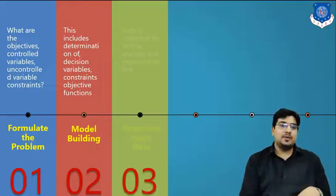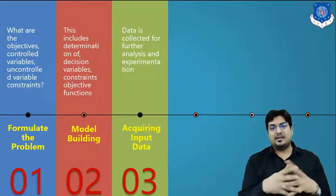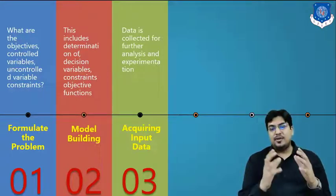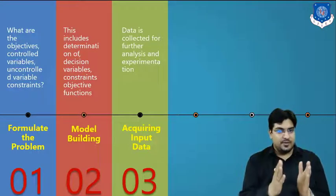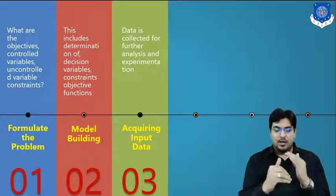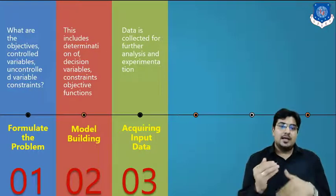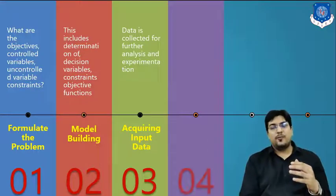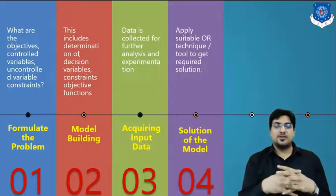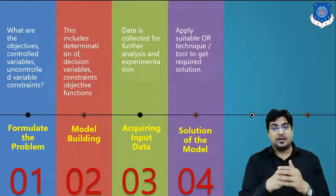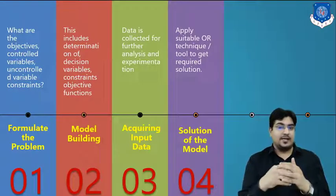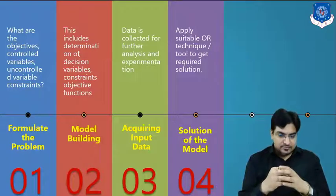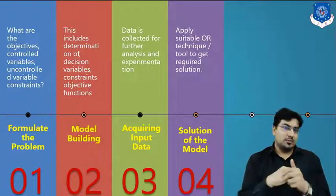Phase three is acquiring input data. This data is collected for further analysis and experimentation. So first you formulate the problem, then build a model, then acquire input data. Phase four is the solution of the model — you apply suitable OR techniques and tools to get the required solution using scientific methods.